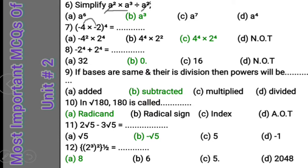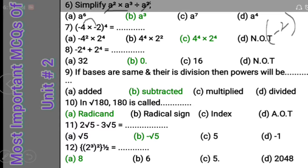Question 8: Minus 2 power 4 plus 2 power 4 is equal to what? Here the minus symbol is separate — it is not minus 2 whole power 4. So the minus sign remains, and 2 power 4 equals 16. Therefore minus 16 plus 16 — these cancel each other, and the simplified answer is zero.